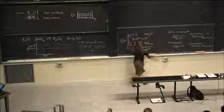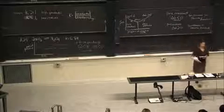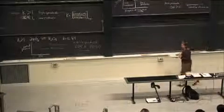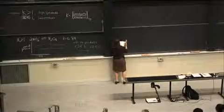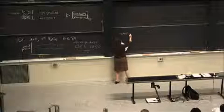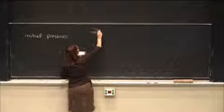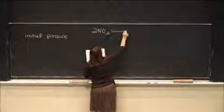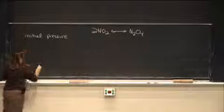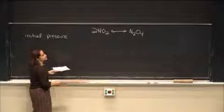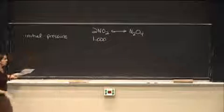So now let's calculate what the concentrations are going to be at equilibrium. So initially you have your initial pressure for the reaction, 2NO2 going to N2O4, and our initial concentrations are given as 1 bar, and we have no product.